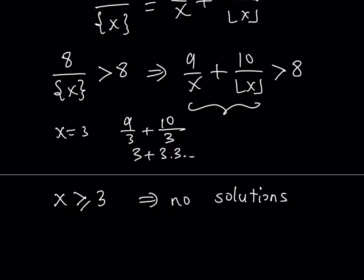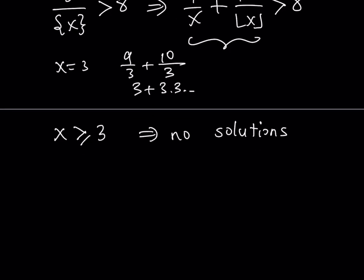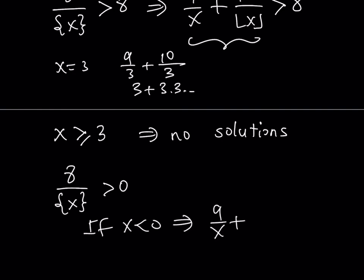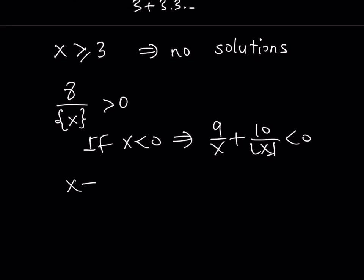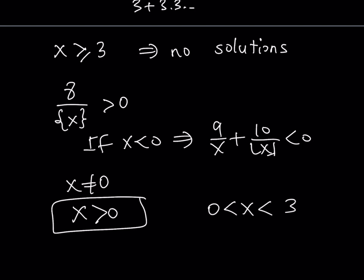What happens if x is negative? Since the fractional part of x is always non-negative, the left-hand side is always greater than 0. But if x is negative, then 9 over x plus 10 over the floor value of x is a negative quantity — that's impossible. So x must be greater than or equal to 0, and since x cannot equal 0, x must be greater than 0. Combined with our upper bound, x must be strictly between 0 and 3.